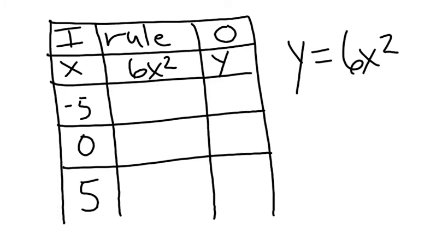You've got input, rule, and output. The table already has the rule written into it. Remember, the rule is this side of the equation, the x side. They've already chosen some values to use for x. So, all we have to do is fill this in, do the math, and find the y's.